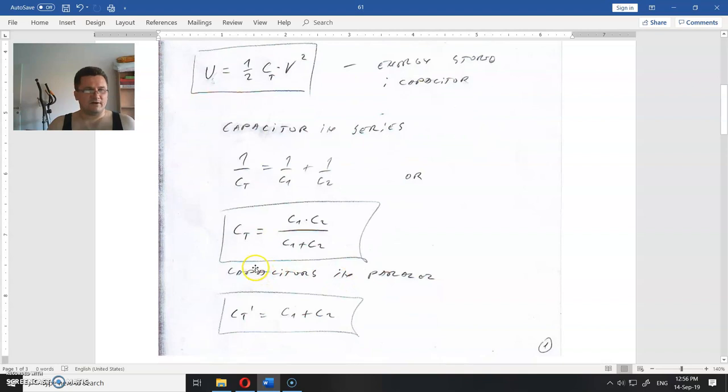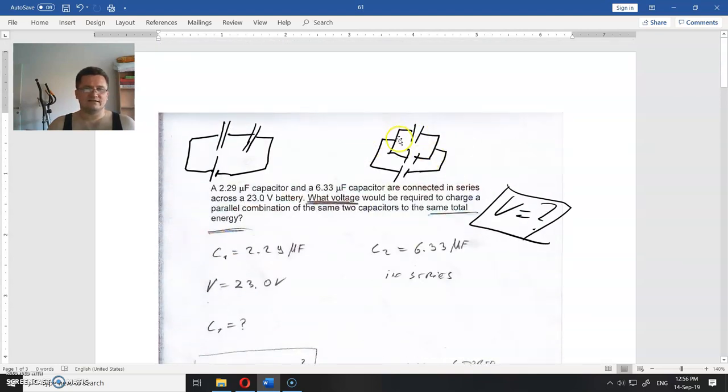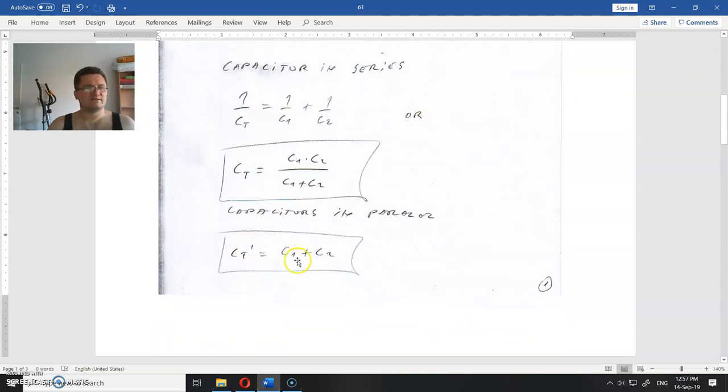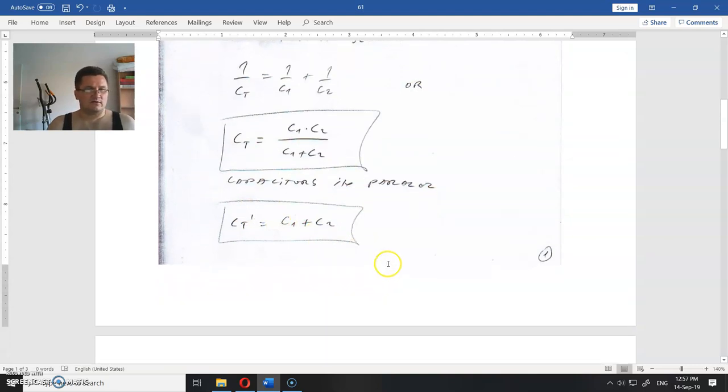And when they are in parallel, when they are connected like this, this is the voltage source. When they are parallel, they are connected like that, and the capacitances will just add: C_eq = C_1 + C_2.